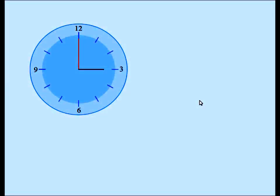Before we can get to our main problem of finding the angle between the hands of an analog clock, let's try to find out a few things. We need to know exactly what angle is swept by the minute hand every minute and what angle is swept by the hour hand every minute. The black hand is the hour hand and the red hand is the minute hand.